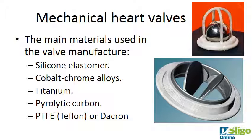The main materials used in these valves: the original ball-and-cage used a silicone elastomer ball. The cage was a titanium or cobalt-chrome alloy structure, with a polytetrafluoroethylene (PTFE) — known by trade names Teflon or Dacron — woven coating around it, which allowed the cage to be integrated into the patient's tissue. More recently, bileaflet valves are the most popular mechanical type.